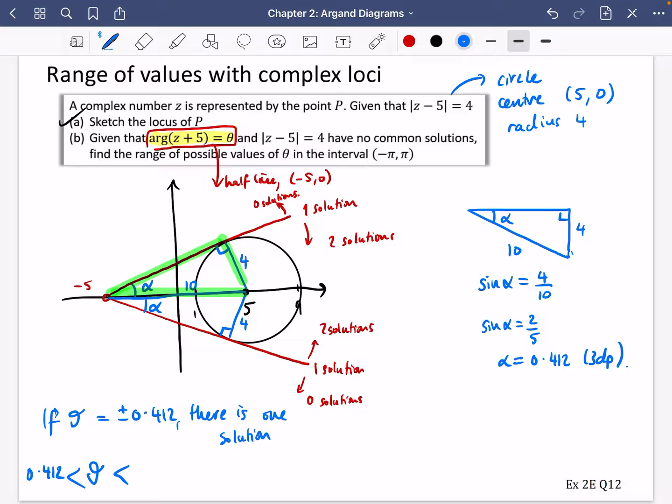But remember, it's also got to be less than π because we want it to be inside this range. Less than or equal to π. Maybe not or equal to because this is a curled bracket rather than a blocked bracket. But that's one of the solutions for this. Or we want θ to be less than -0.412, but still greater than -π. So there's -π over here. There's -0.412. If it's inside that region, there are no solutions.